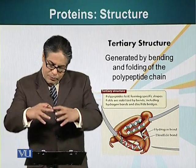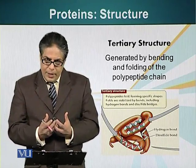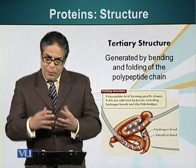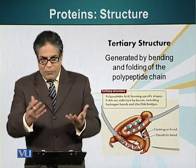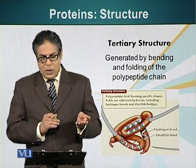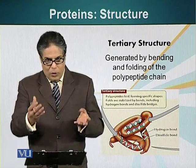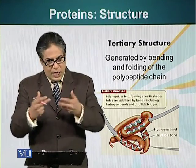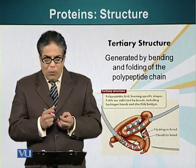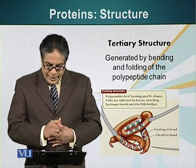This folding of a protein upon itself can be stabilized by all types of different bonds that we have talked about: hydrogen bonds, covalent bonds — the sulfur atoms we talked about in cysteine forming the disulfide bond — and also ionic interactions.